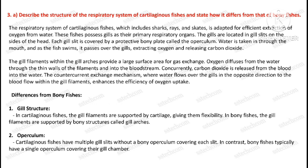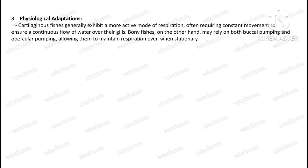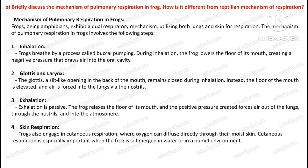Question number three, first part: describe the structure of the respiratory system of cartilaginous fishes and state how it differs from that of bony fishes. The second part: briefly discuss the mechanism of pulmonary respiration in frog and how it is different from the reptilian mechanism of respiration.